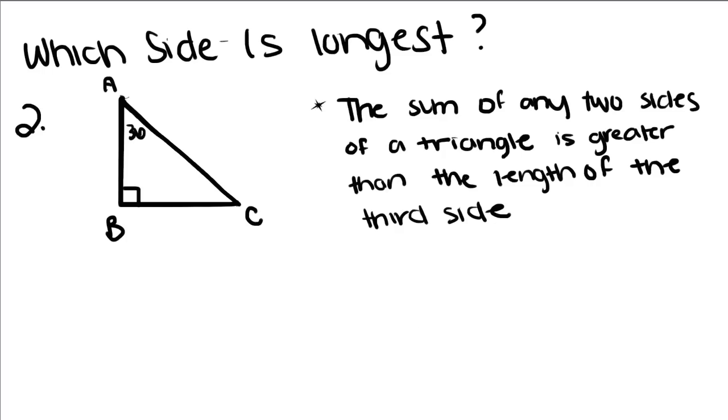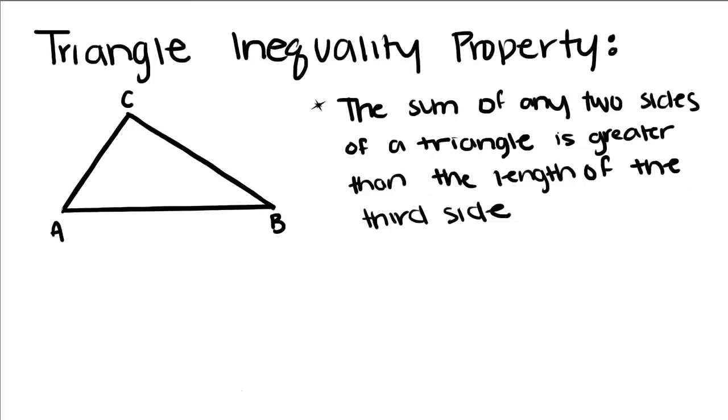And last, lastly, we know that the sum of any two sides of a triangle is greater than the length of the third side. So that means that the sum of CB plus CA is greater than AB.